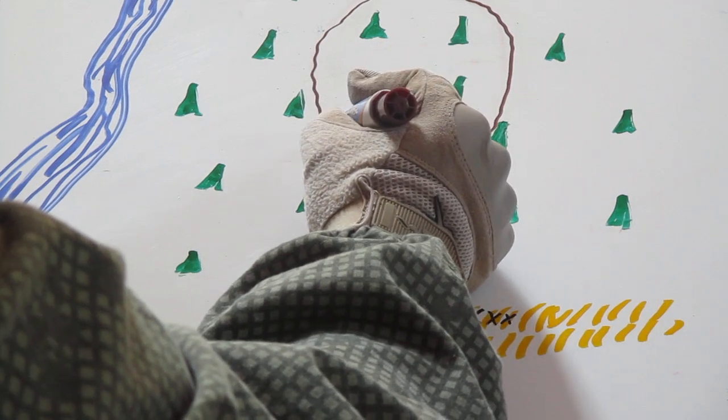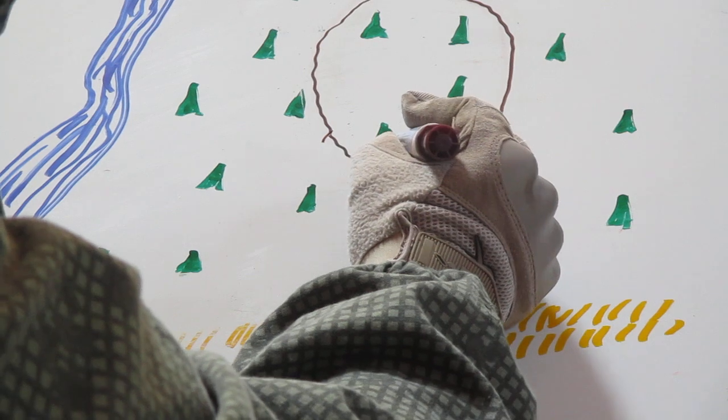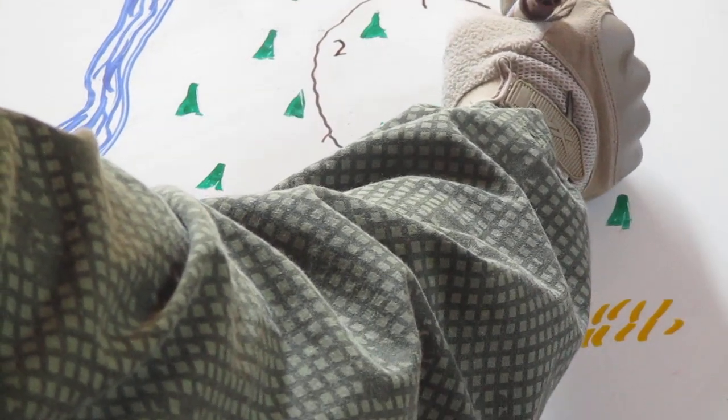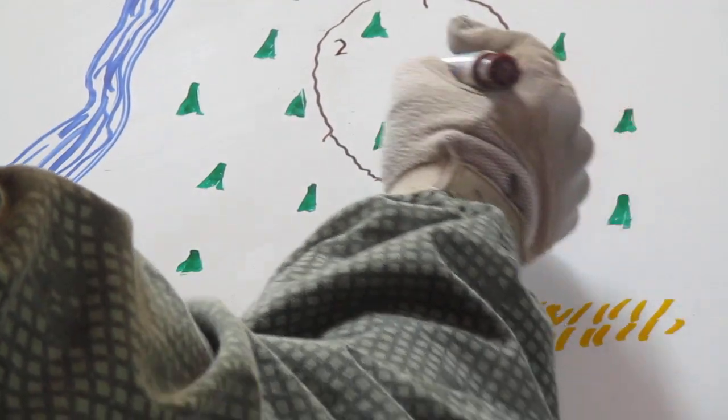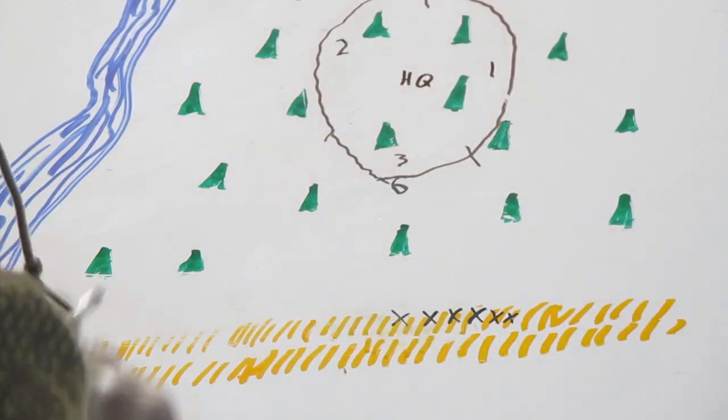So we have down here, this would be filled in by third platoon. This would be filled in by second, and this part of the perimeter would be filled in by first. And then headquarters would take up the center.